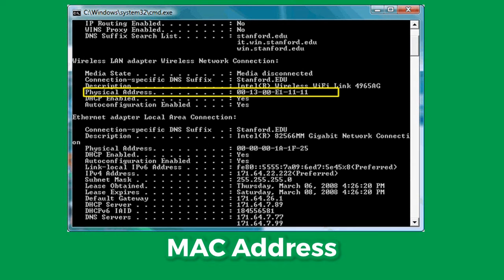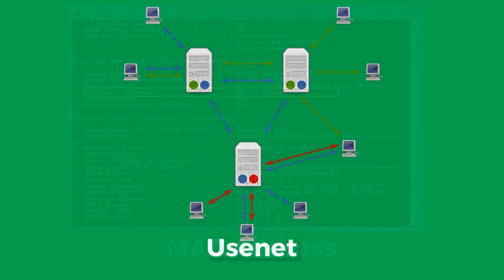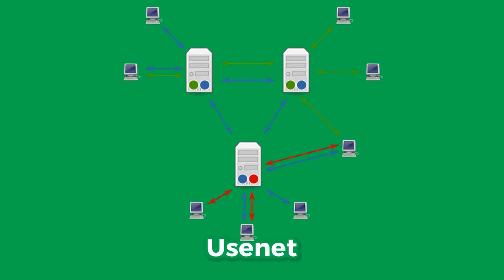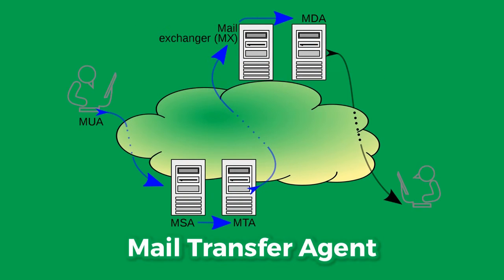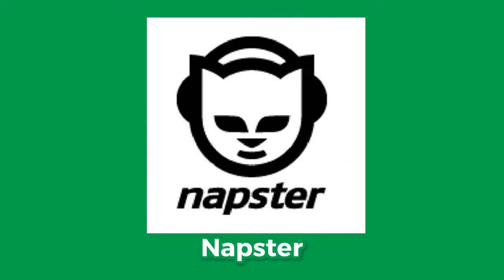Now let us talk about some important software and applications, starting with Usenet, a news reader which became the precursor of forums. The message transfer agent is software which transfers emails from one computer to another. There was also Napster, a peer-to-peer file sharing internet service focused on music.